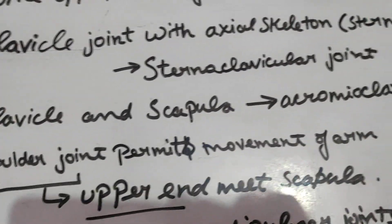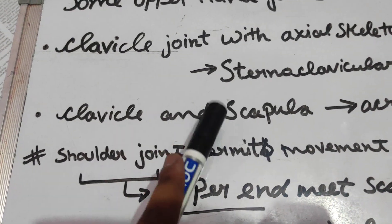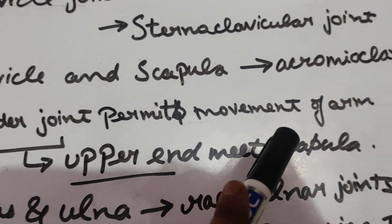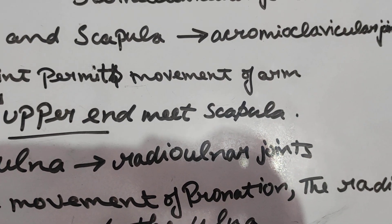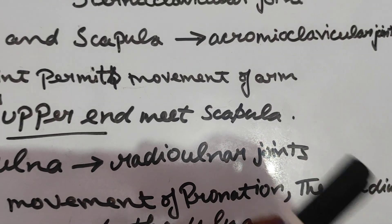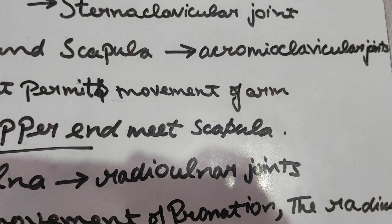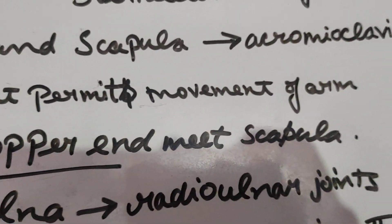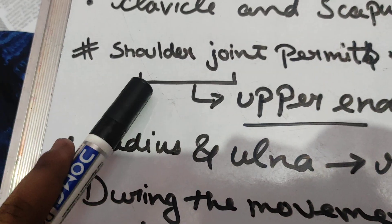Next is the shoulder joint, which permits the movement of the arm. The arm is referred to at the humerus point, and the lower part where the ulna and radius belong is called the forearm. When the upper end of the arm meets the scapula, it's called the shoulder joint.